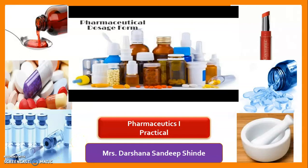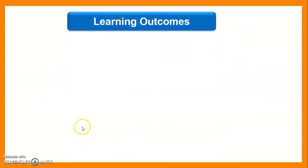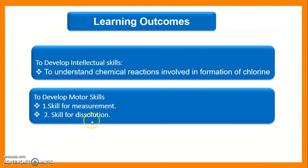Welcome, dear students, to another session of Pharmaceutics First Practical. I am Darsana Sandivshande. Our today's experiment is experiment number 14. The title is to prepare, evaluate and submit 25 ml surgical chlorinated soda solution BP, also known as Dakin's solution. Learning outcomes: students should be able to develop intellectual skills to understand the chemical reaction involved in the formation of chlorine, and motor skills like measurement and dissolution.